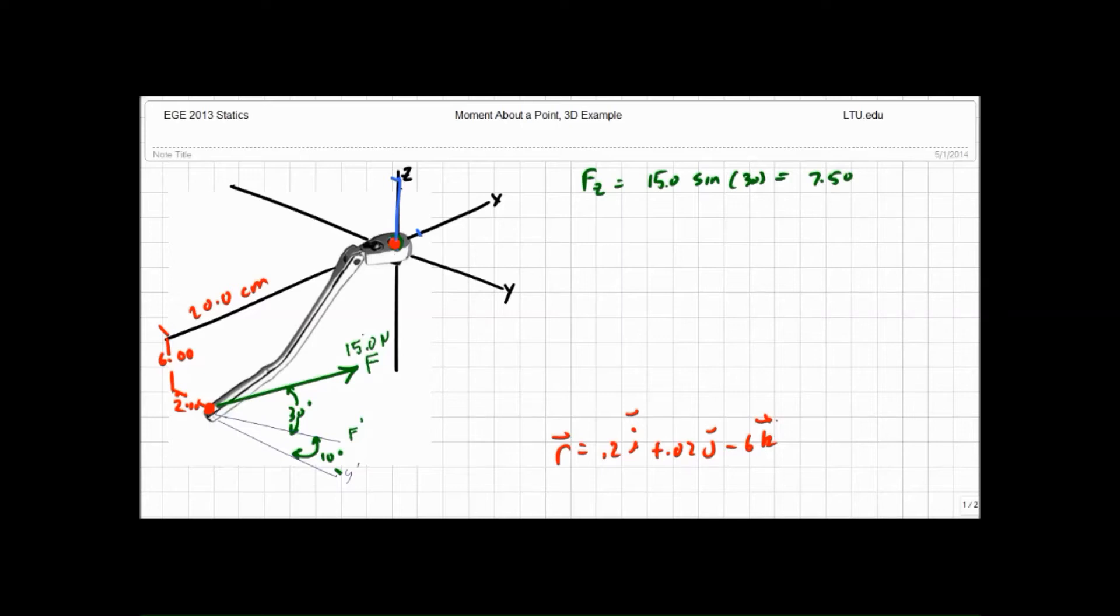I can project this force down onto that f prime line in the xy plane or parallel to the xy plane and I can come up with f prime in the xy plane equals 15.0 cosine of 30 equals 13.0.